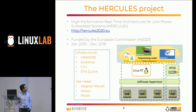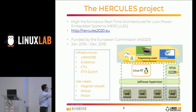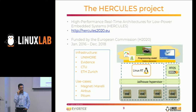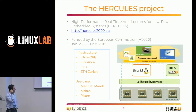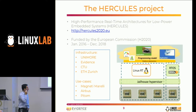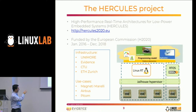The Hercules project started almost three years ago and is funded by the European Commission. The hardware architecture relies on a multi-core ARM platform where, through the Jailhouse hypervisor, some cores are allocated to Linux and one or more cores to an RTOS certified for automotive. On top of this we have run automotive applications made by Magneti Marelli and avionics applications made by Airbus. This is the overall software architecture we implemented.